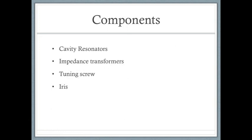One of the basic components of a waveguide filter is the cavity resonator. It consists of a short length of waveguide blocked at both ends. Waves trapped inside the resonator are reflected back and forth between the two ends, and a given geometry of cavity will resonate at a characteristic frequency.